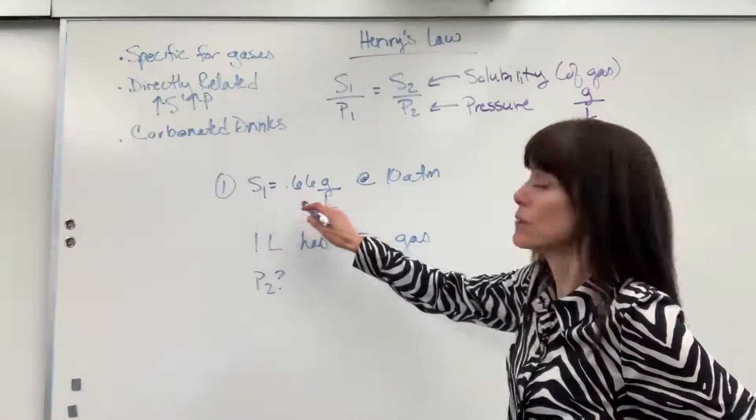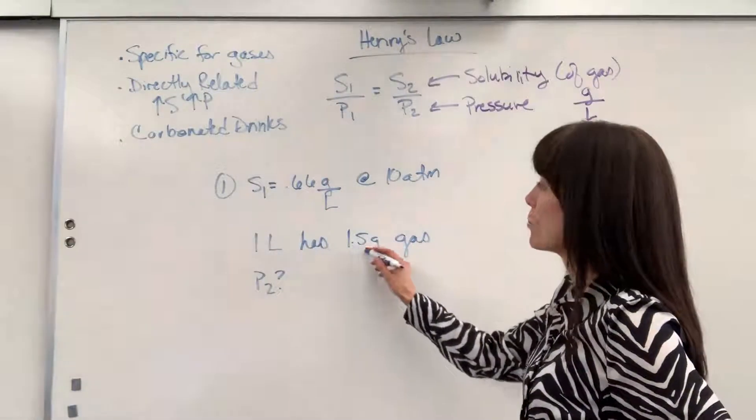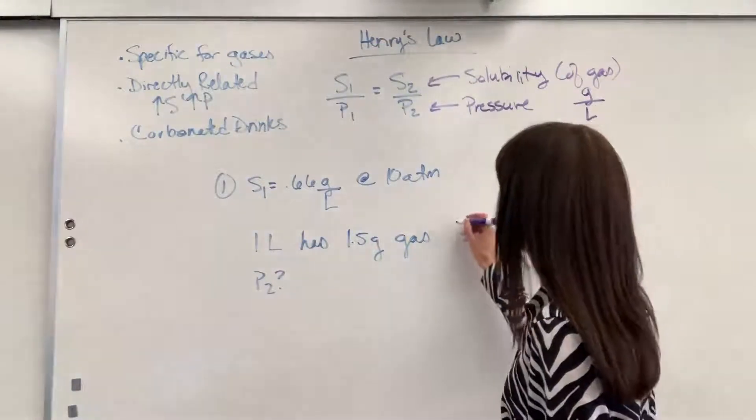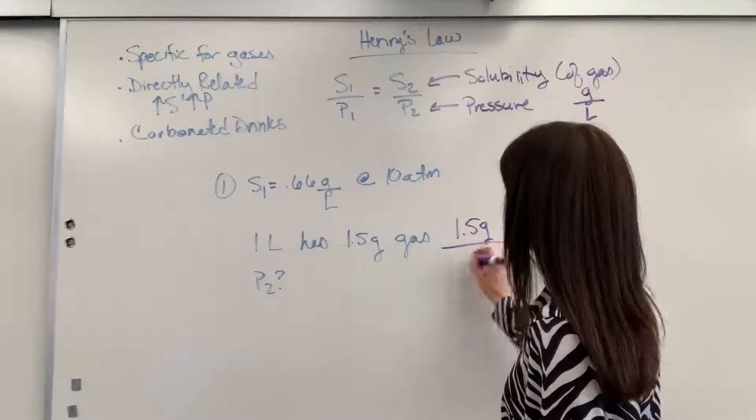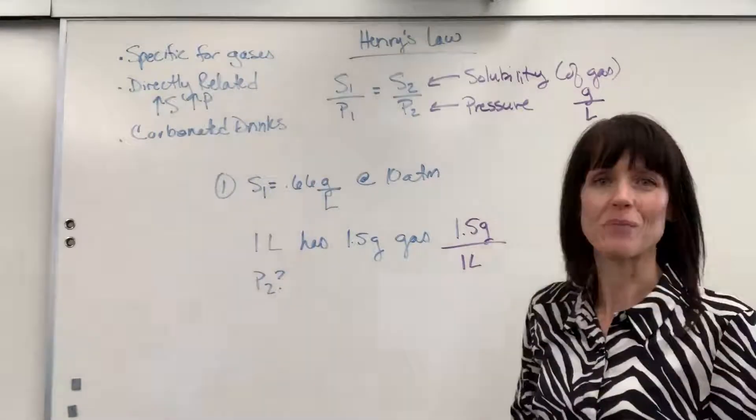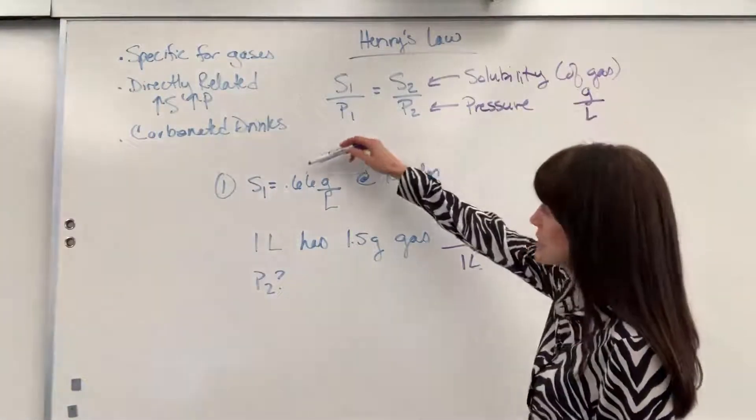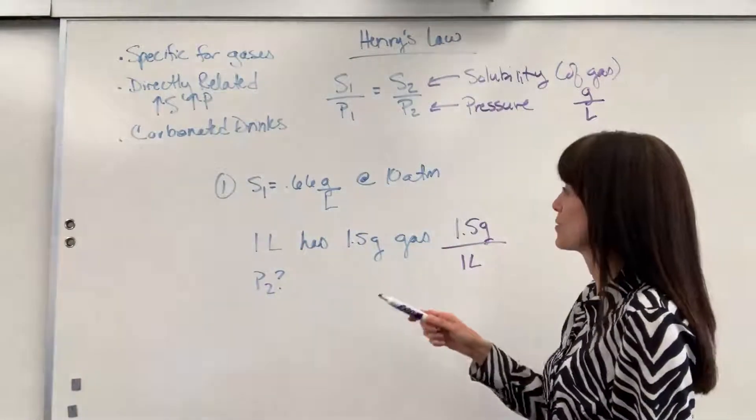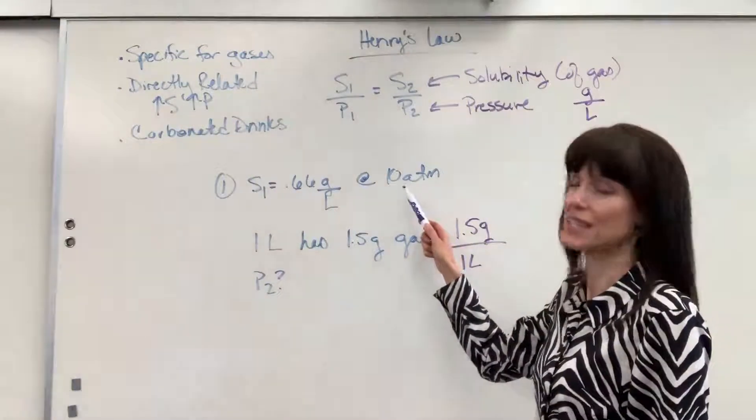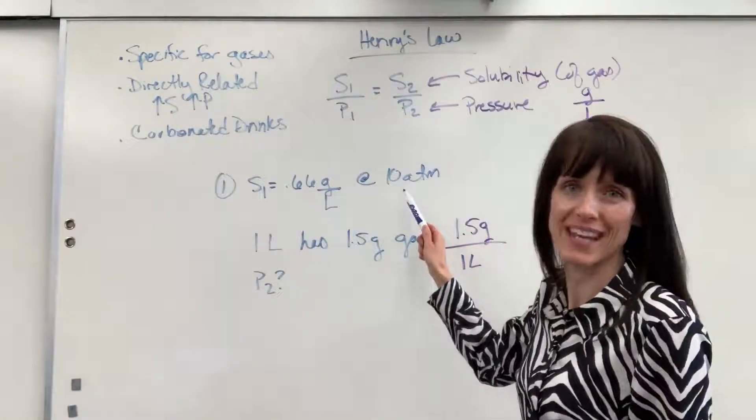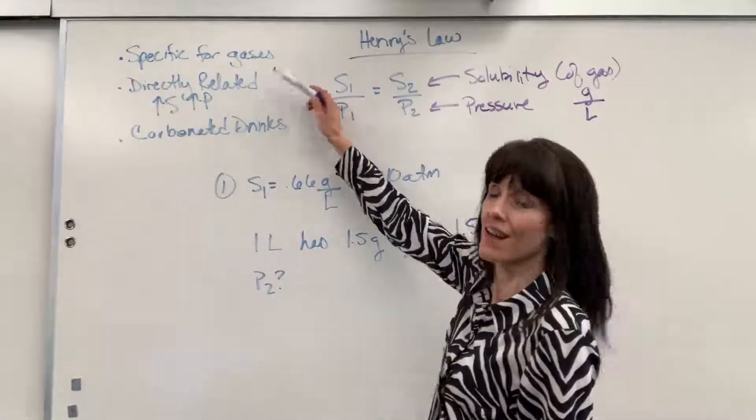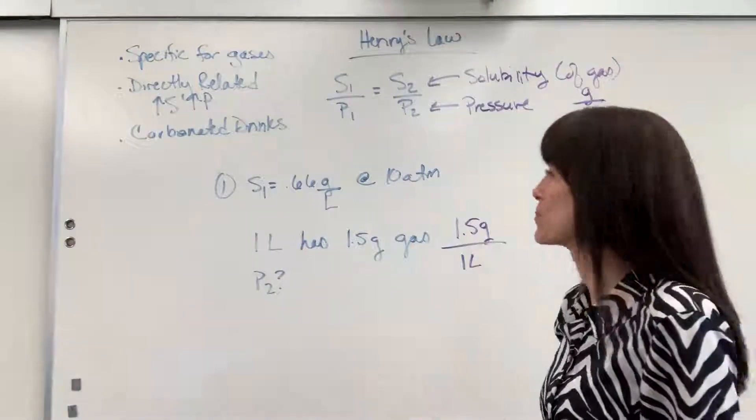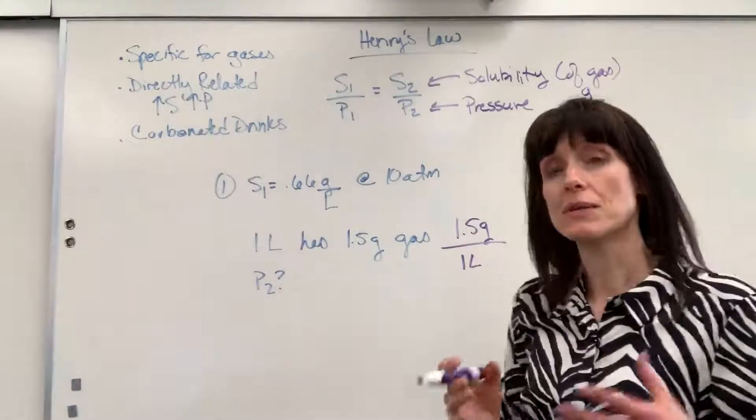Notice the change in solubility. I'm going to go from 0.66 grams per liter to 1.5 grams per liter. This is a tricky way that they wrote this question. The solubility is going to be grams divided by volume, just 1.5 grams per liter. So notice I'm increasing from 0.66 to 1.5. What do you predict will happen to the pressure? Is it going to go up or down, higher or lower than 10? Directly related right there. If we want to increase the solubility, we're going to have to put more pressure. We have to increase that pressure.